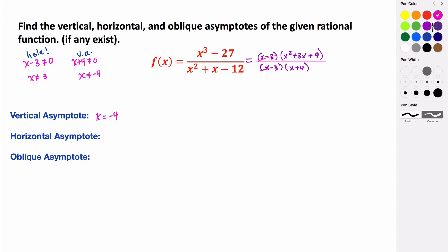So let's look at the horizontal asymptotes. But before we do that, we want to write this polynomial function in its simplest form. So we have, in the numerator, x squared plus 3x plus 9, divided by x plus 4. So this is our reduced polynomial function.